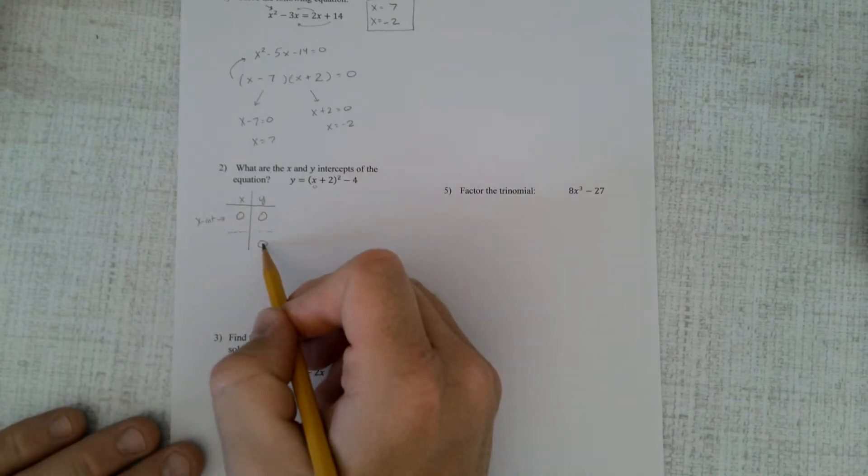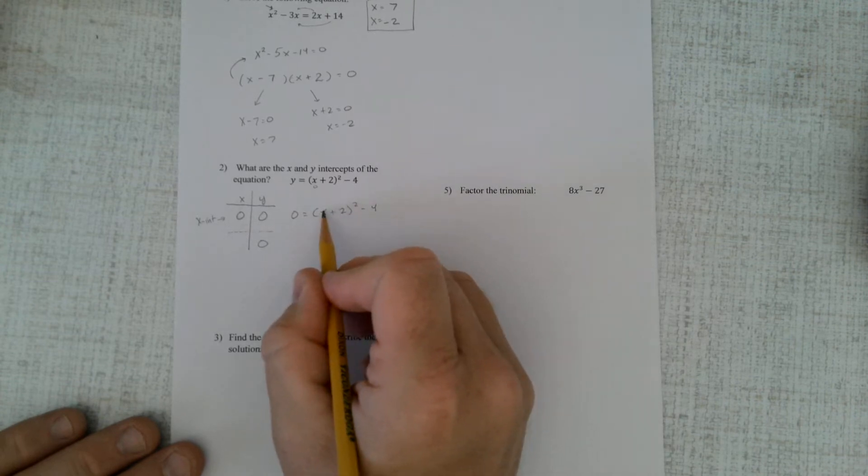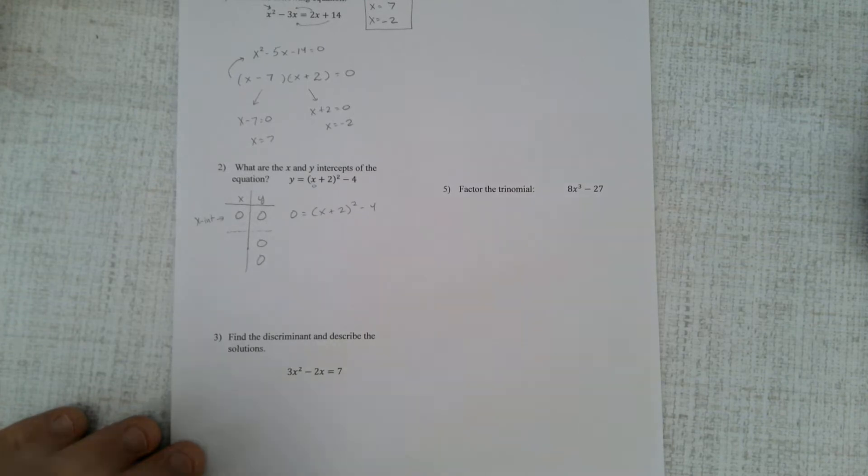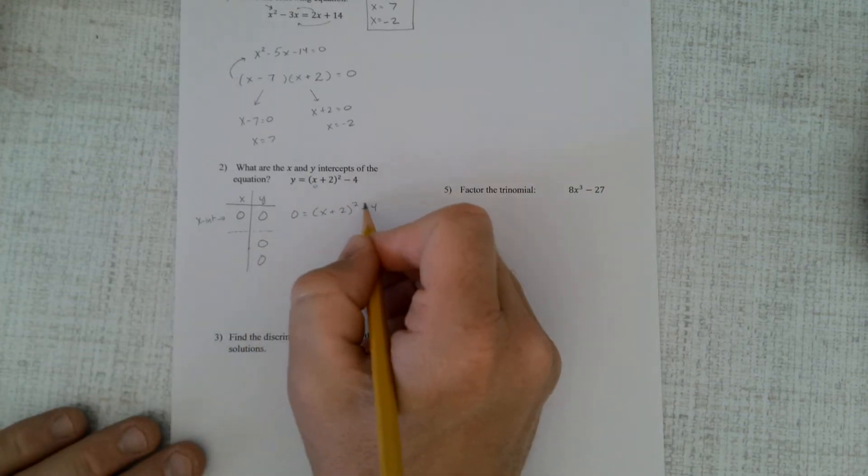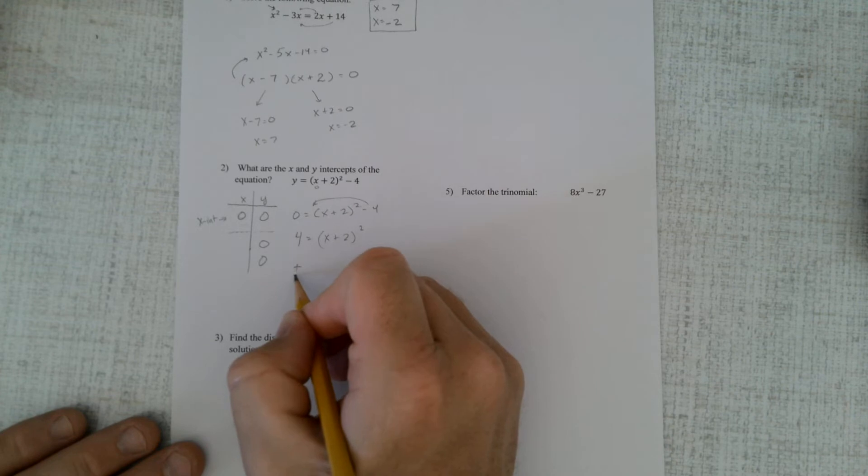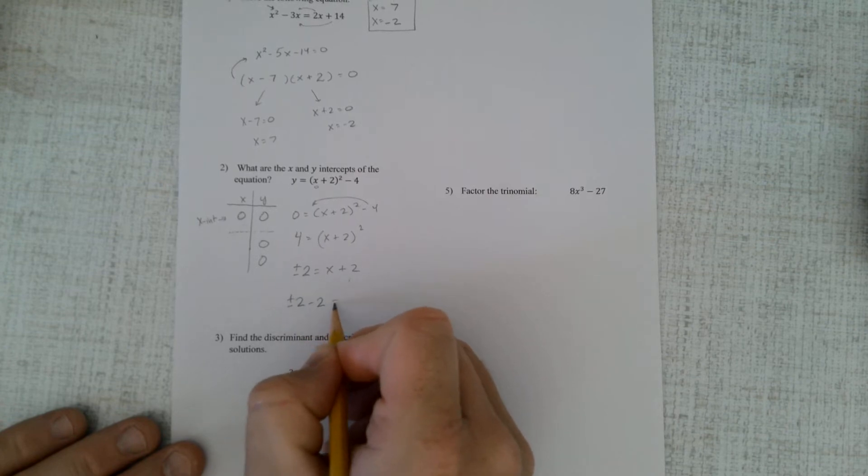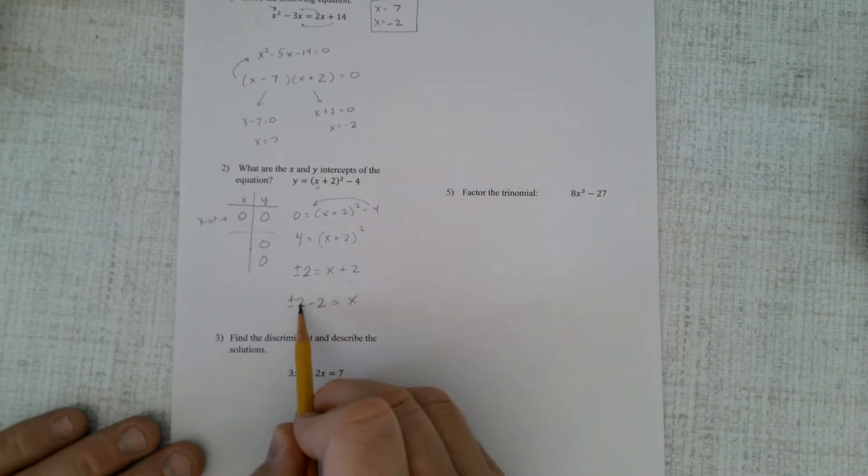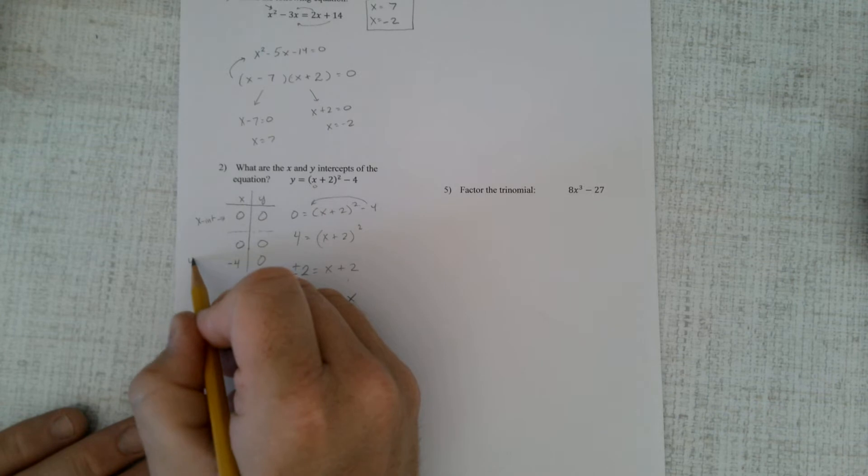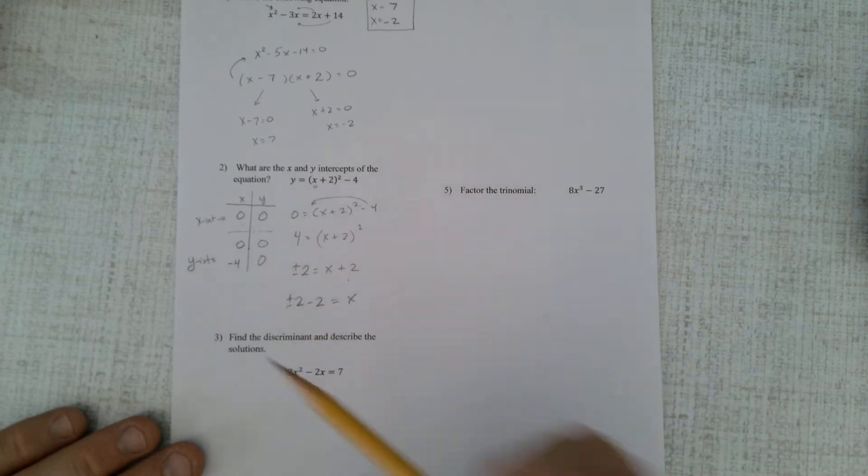This one's a little bit trickier. I have to plug in 0 for y. So if I plug in 0 for y now, now I have a situation where the x is being squared. So again, I have two intercepts for this. Let's solve this one a little different. Let's swing this over here, and I have 4 = (x + 2)². Take the square root. Well, that's ±2. Subtract the 2 over there. ±2 - 2 is x, and there's my solution. Positive 2 - 2 is 0, and -2 - 2 is -4. So these are my x intercepts. And this point right here happens to be both. It's both an x intercept and a y intercept because it's at the origin.